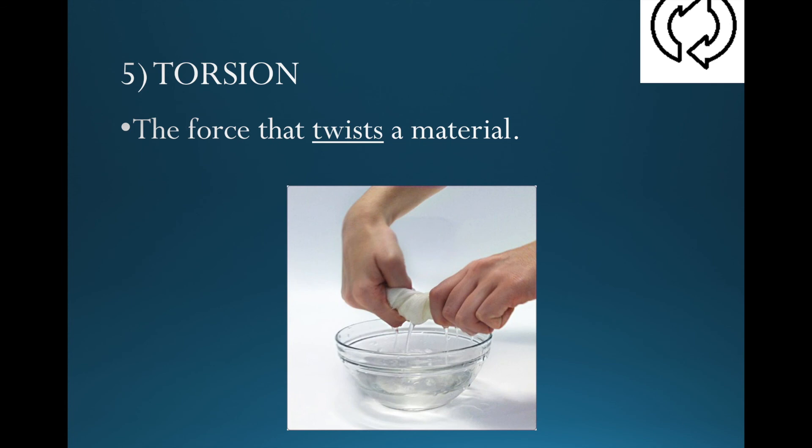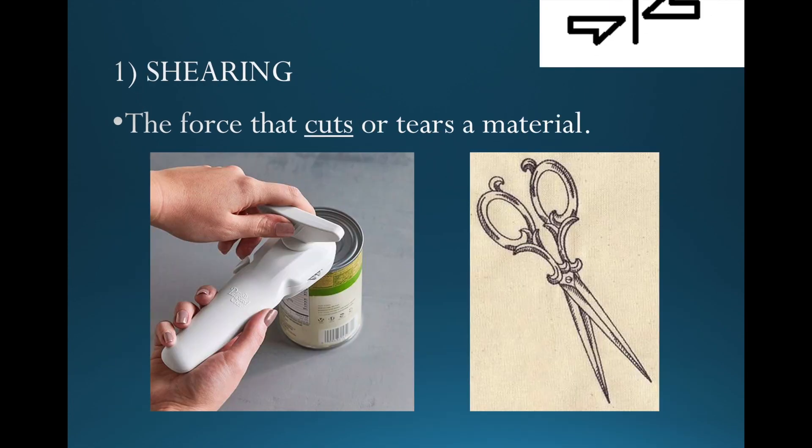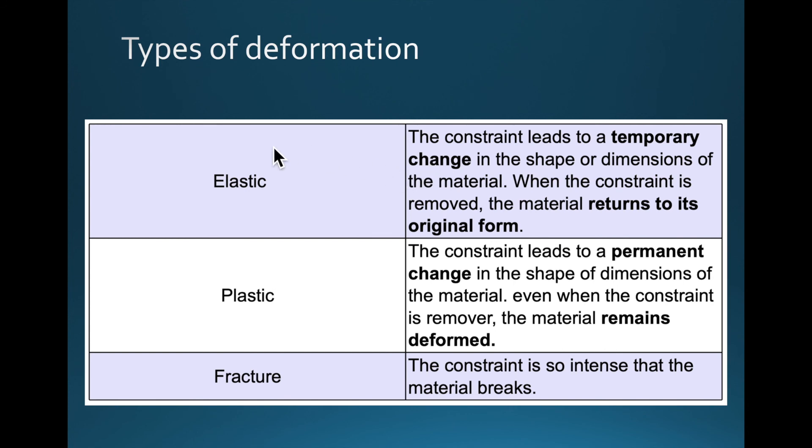Last one, we have torsion. Torsion is when we twist something, when we twist a material. You can see here, the image we use is literally two arrows that are turning in a circle. When we twist something, it's called torsion. All these can lead to either one of three things: either an elastic change, a plastic change, or a fracture, depending on the force that is used, the type of material that is used, and the amount of time that the force is put on a given material.